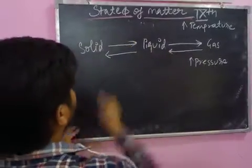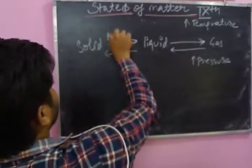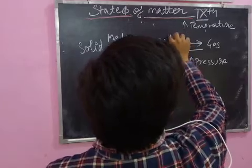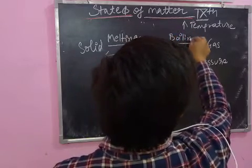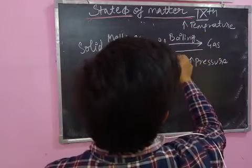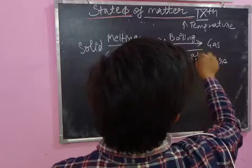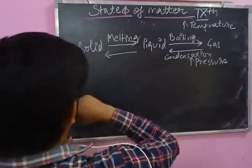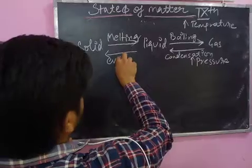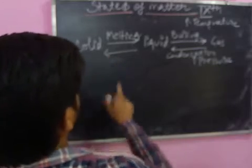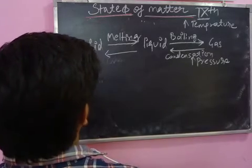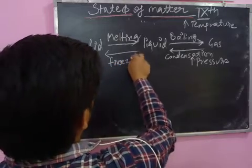The process of solid converting to liquid is known as melting. Liquid converting into gas is known as boiling. Gas converting into liquid is known as condensation. And liquid converting into solid is known as freezing.